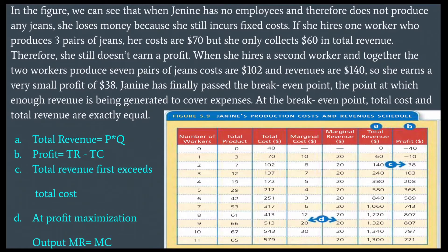In the figure, we can see that when Janine has no employees and therefore doesn't produce any jeans, she loses money because she still incurs fixed costs. If she has one worker who produces three pairs of jeans, her costs are $170 but she only collects $160 in total revenue, so she still doesn't earn a profit. When she hires a second worker and together the two workers produce seven pairs of jeans, costs are $102 and revenues are $140, so she earns a very small profit of $38. Janine has finally passed the breakeven point — the point at which enough revenue is being generated to cover expenses.